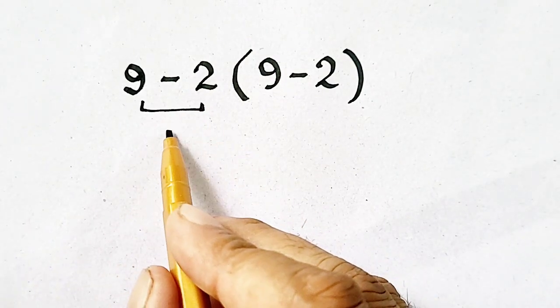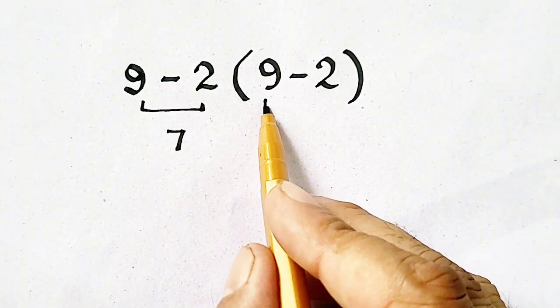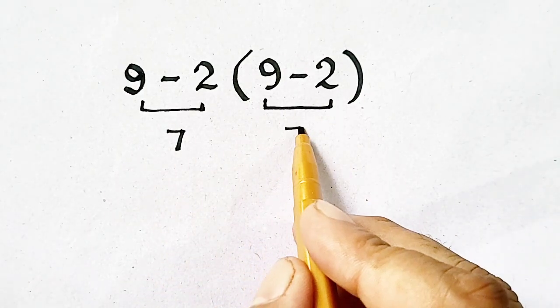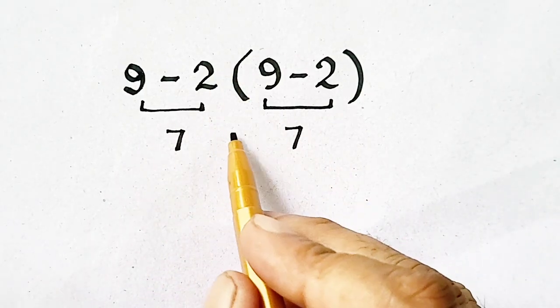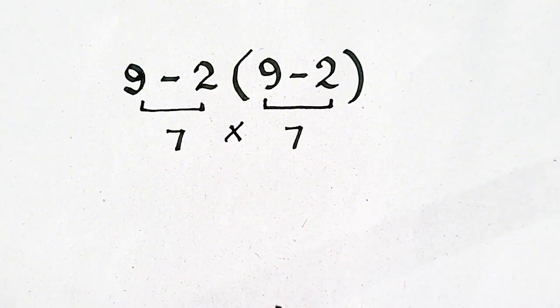9 minus 2 will be equal to 7, and 9 minus 2, it is also equal to 7. Here is no sign, so we will put multiplication sign.